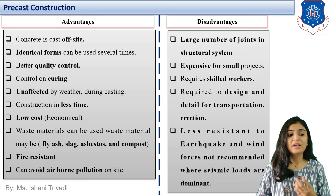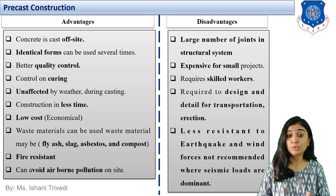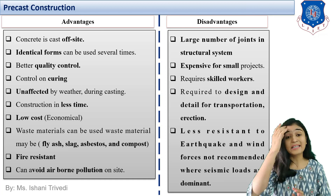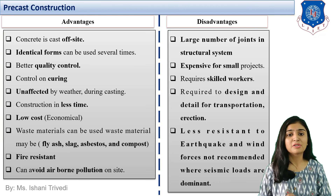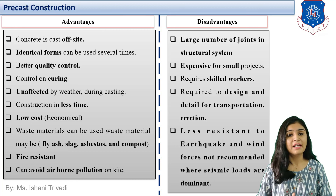Precast construction is unaffected by weather during casting — unlike cast-in-situ work which struggles in monsoon or high-humidity conditions. It is low cost after initial setup. Waste materials such as fly ash, slag, or asbestos can be infused into the concrete members as admixtures to gain more strength.